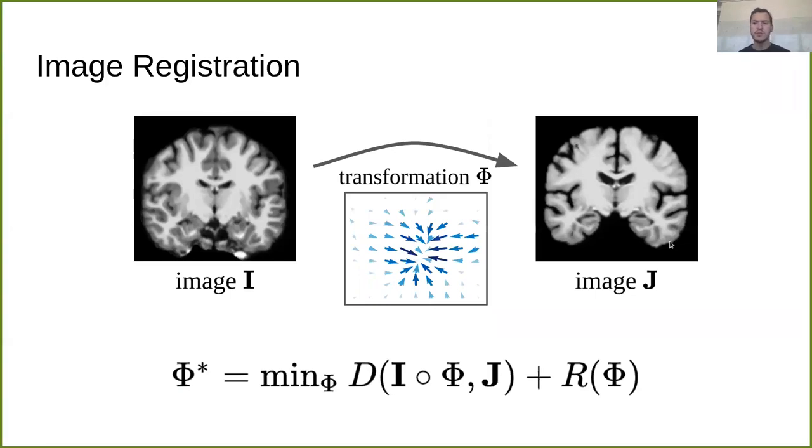In image registration, we want to align the moving image I to fixed image J through some geometric transformation phi. In our case, the transformation is a dense vector field, meaning for each pixel in one image, we try to find the corresponding pixel in the other image.